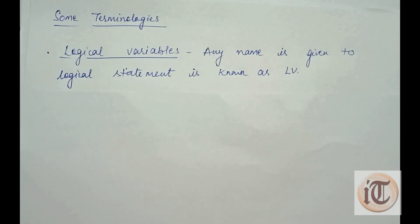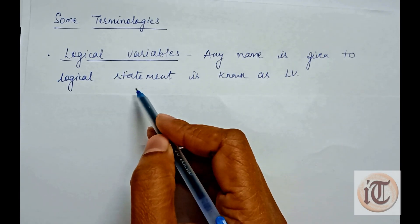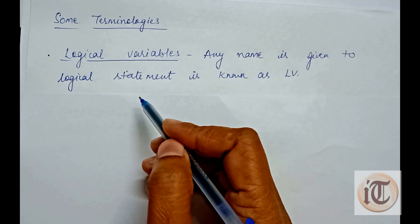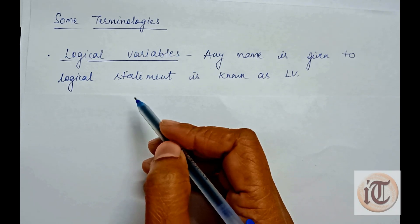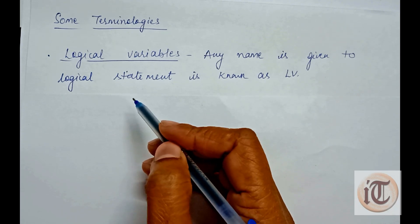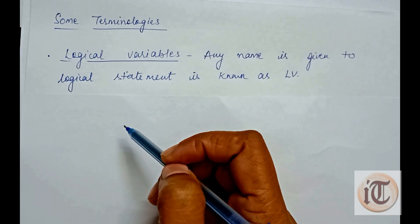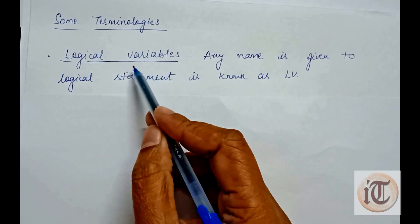The first terminology is logical variables. Any name which is given to any logical statement is known as a logical variable. A logical statement is one that has a definite truth value — for example, 'the sun rises in the east' is a logical statement. A question like 'at what time does the sun rise' is not a logical statement. Any variable or name we provide to a logical statement is called a logical variable.